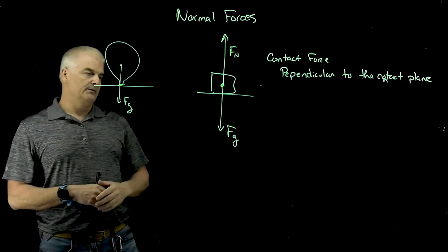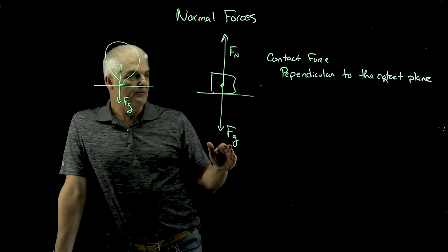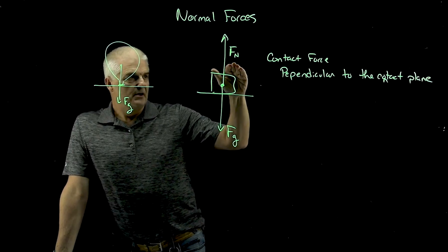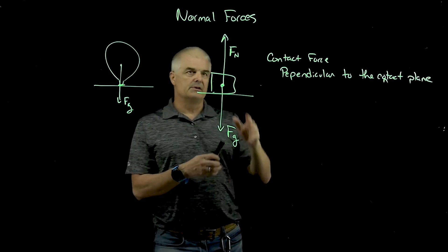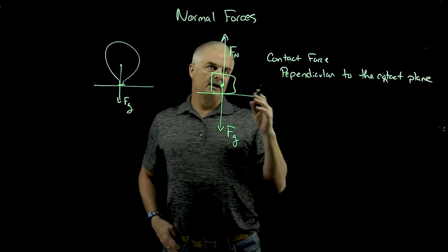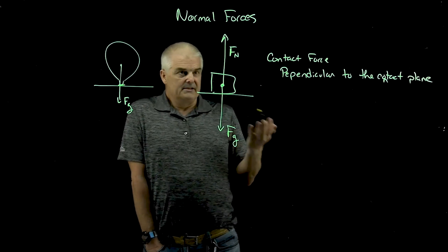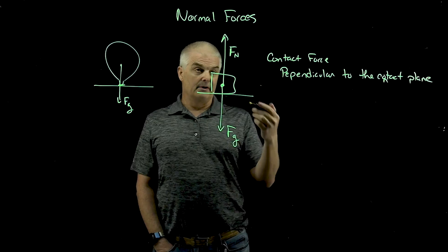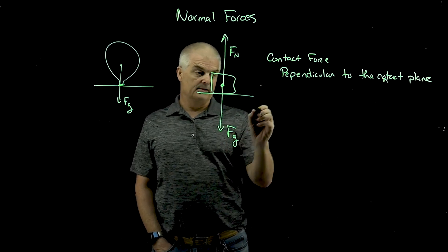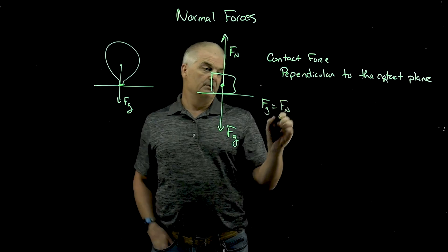If it's on level ground, we'll talk later about non-level ground, the force of gravity has to equal the normal force. Because remember, in previous videos we've talked about this, that if you have a net force there'll be acceleration. But if I have a box sitting on a table, it's not accelerating. And since it's not accelerating, then the force of gravity, in this case on level ground, would be equal to the normal force.